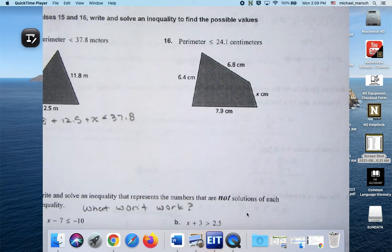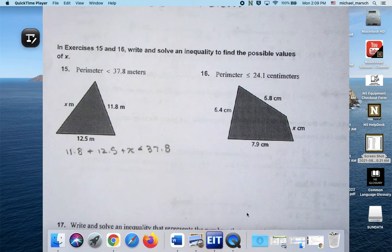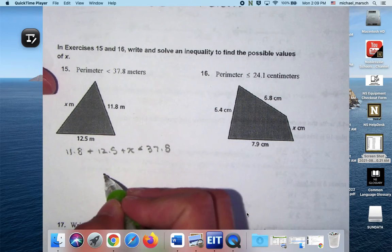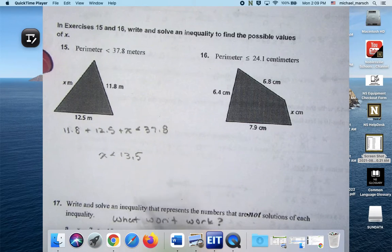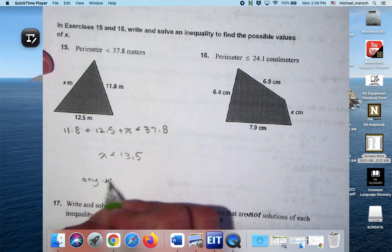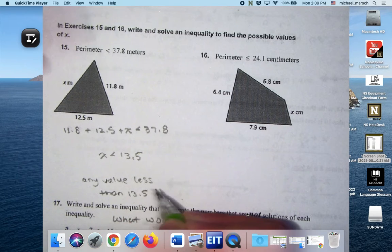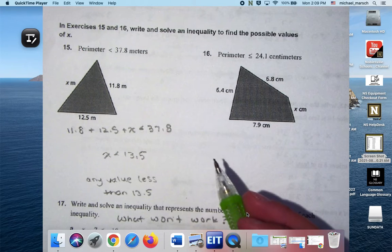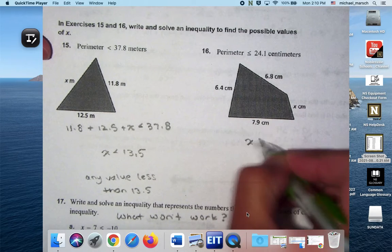We did 14 together on Friday, which left us with 15 and 16 for the perimeters. So I believe for this one, you should get X is less than 13.5. Does that sound familiar? So what would work is any value less than 13.5. Could be that length, right? That would keep our perimeter less than this number.